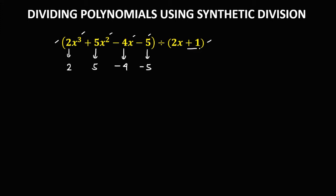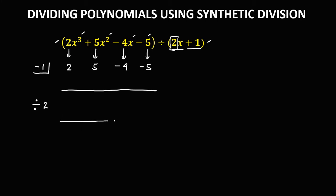Then in the divisor, since the second term is positive 1, so therefore on this side that becomes negative 1. Then on this area, since in the divisor on the first term there is a numerical coefficient positive 2, so we need to divide this area by positive 2 for the final answer. Then apply synthetic division — we need to bring down the first numerical coefficient, so bring down this positive 2.